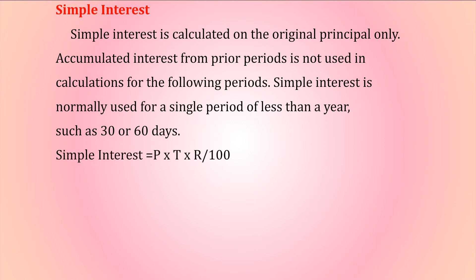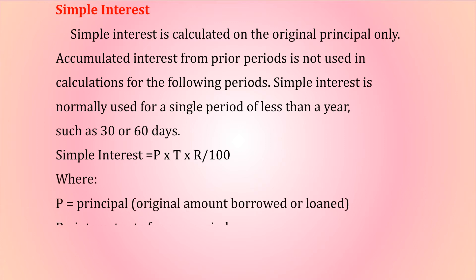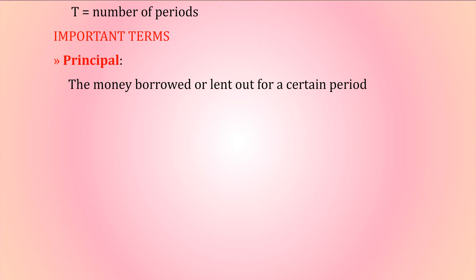Some important formulas: Interest is the extra money earned or returned. Simple interest is equal to P × T × R / 100, where P is the principal (original amount borrowed or loaned), R is the interest rate for one period, and T is the number of periods.